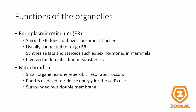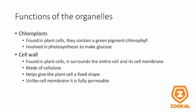The mitochondria is known as the powerhouse of the cell because it is where aerobic respiration occurs. Food is oxidized to release energy for the cell's use, and it is surrounded by a double membrane. The mitochondria also contains its own DNA. The chloroplasts are found in plant cells, and they contain a green pigment chlorophyll. They are involved in photosynthesis to make glucose. Like the mitochondria, chloroplasts have their own DNA. The cell wall is found in plant cells, and it surrounds the entire cell and its membrane. It is made of cellulose and helps to give the plant a fixed shape. Unlike the cell membrane, which is partially permeable, the cell wall is fully permeable.